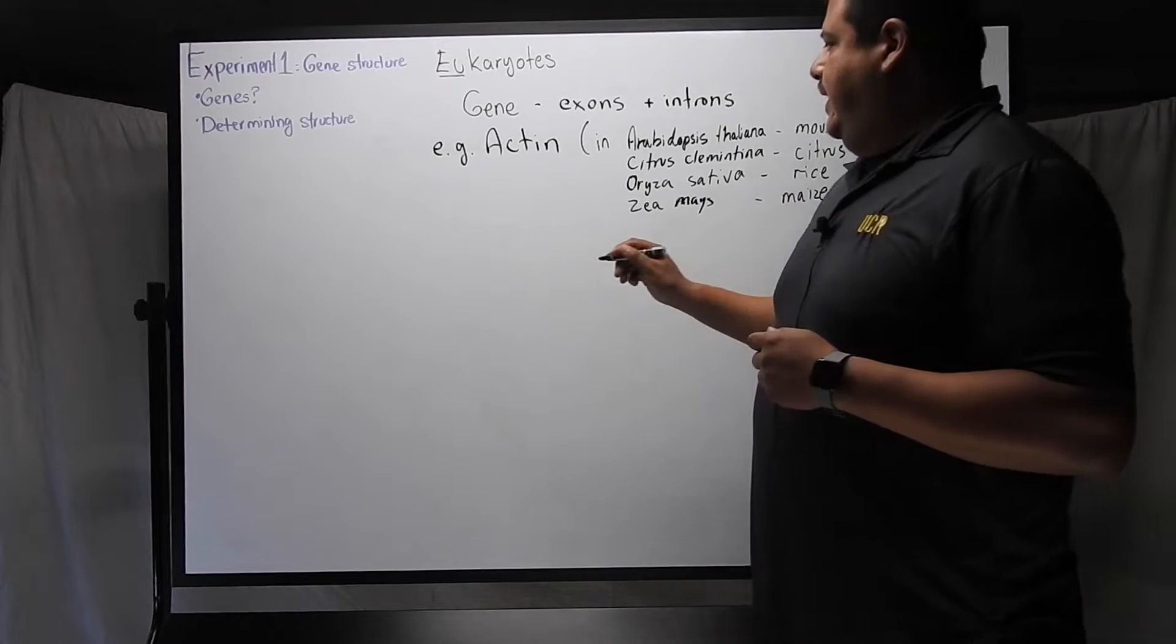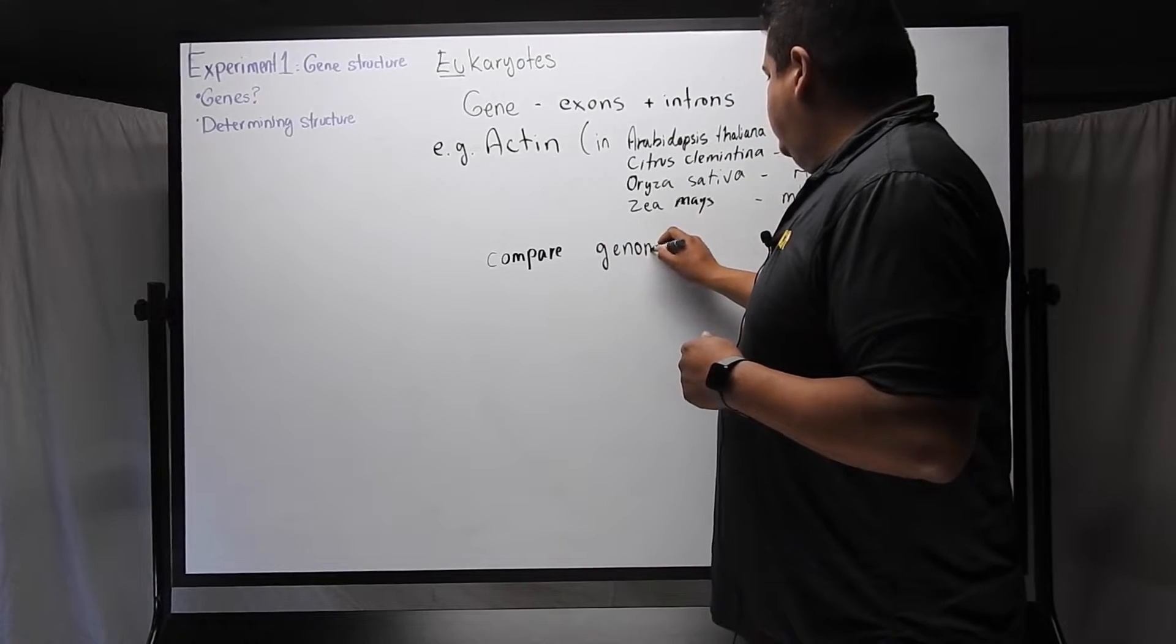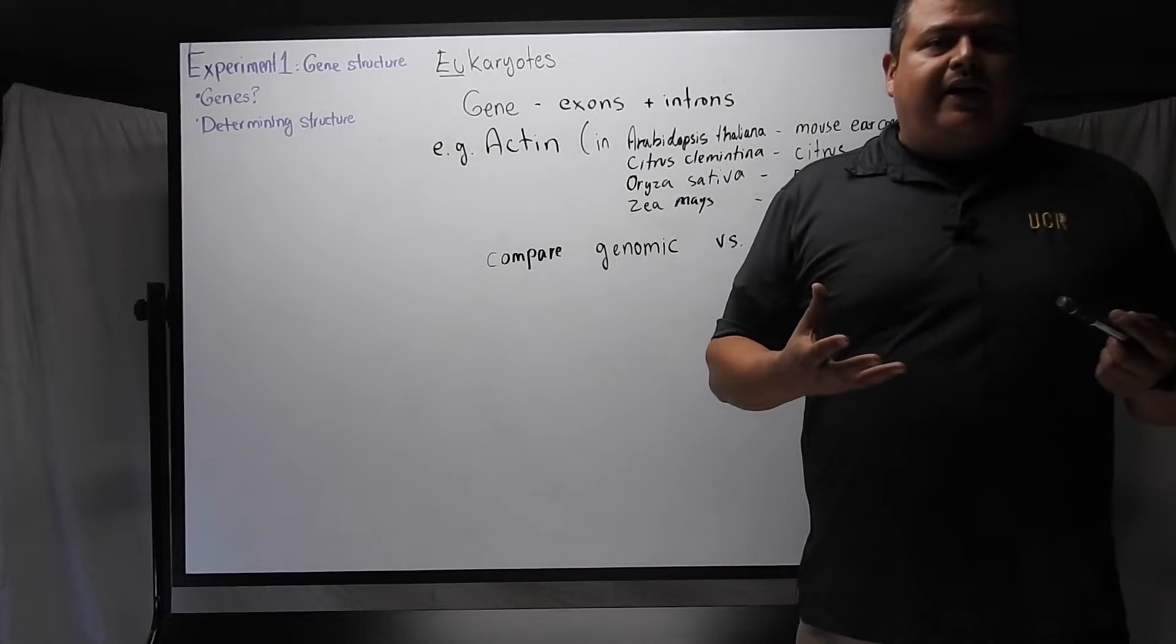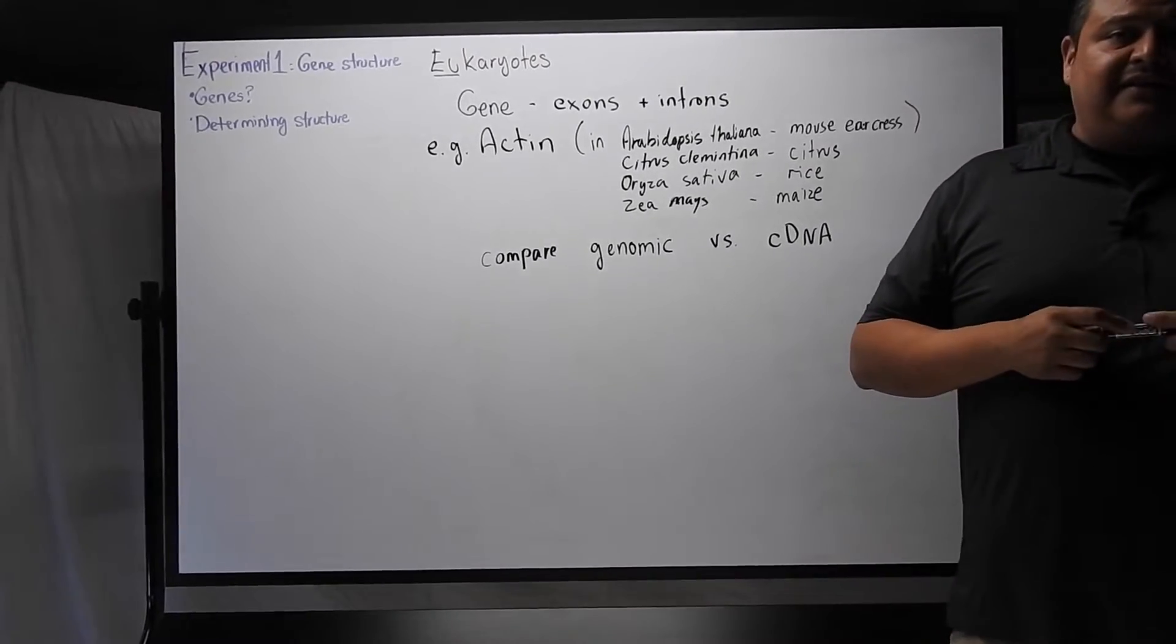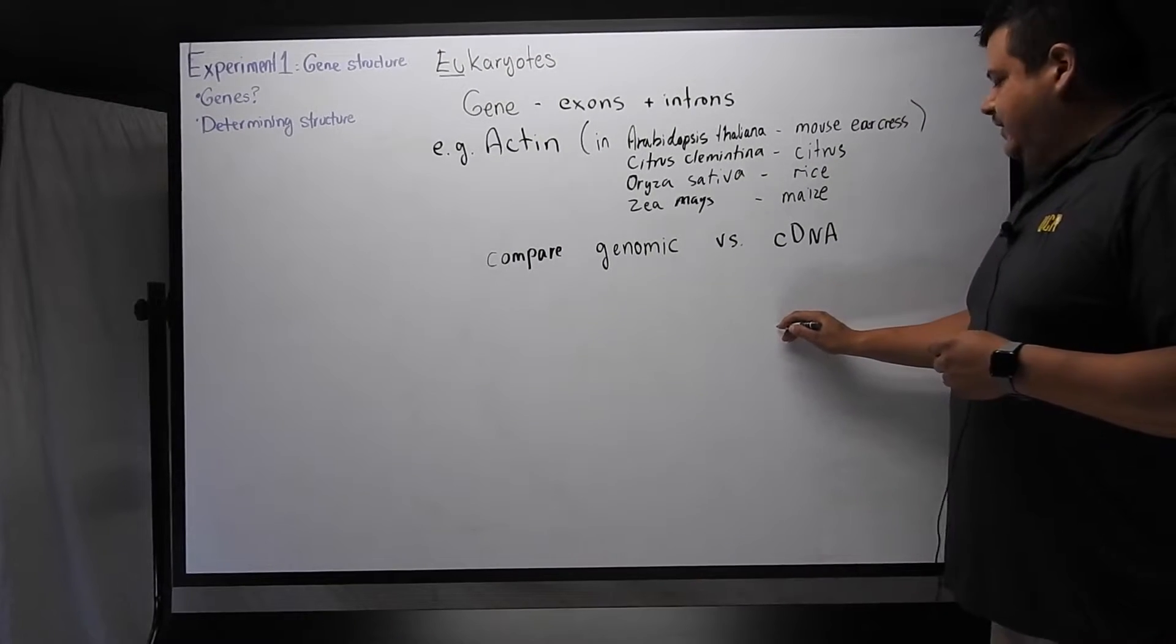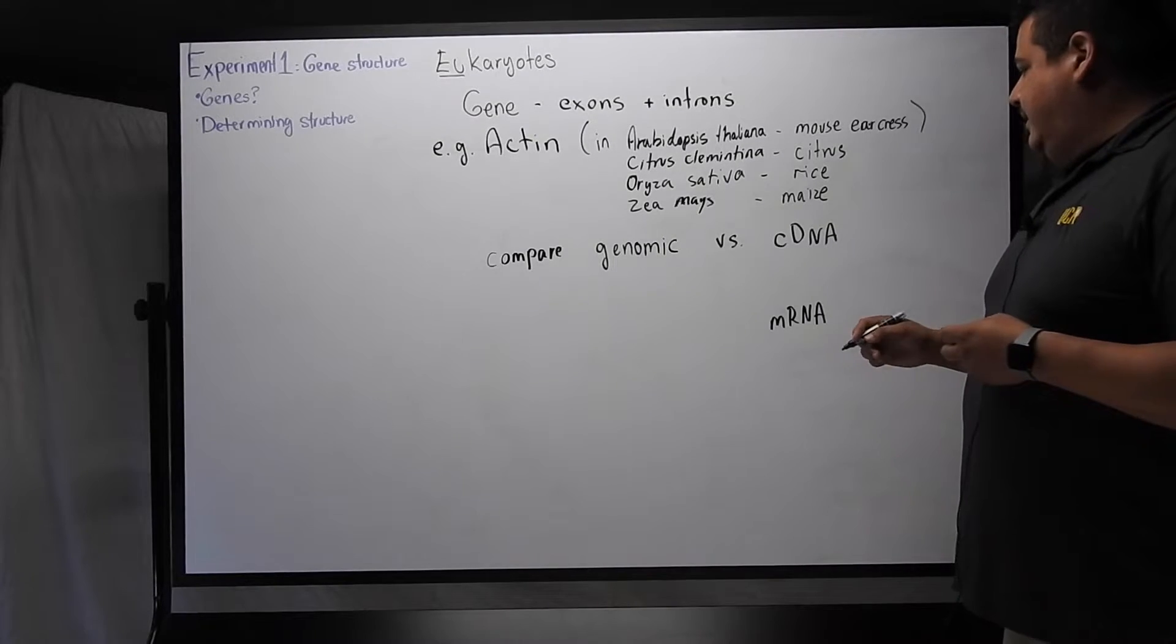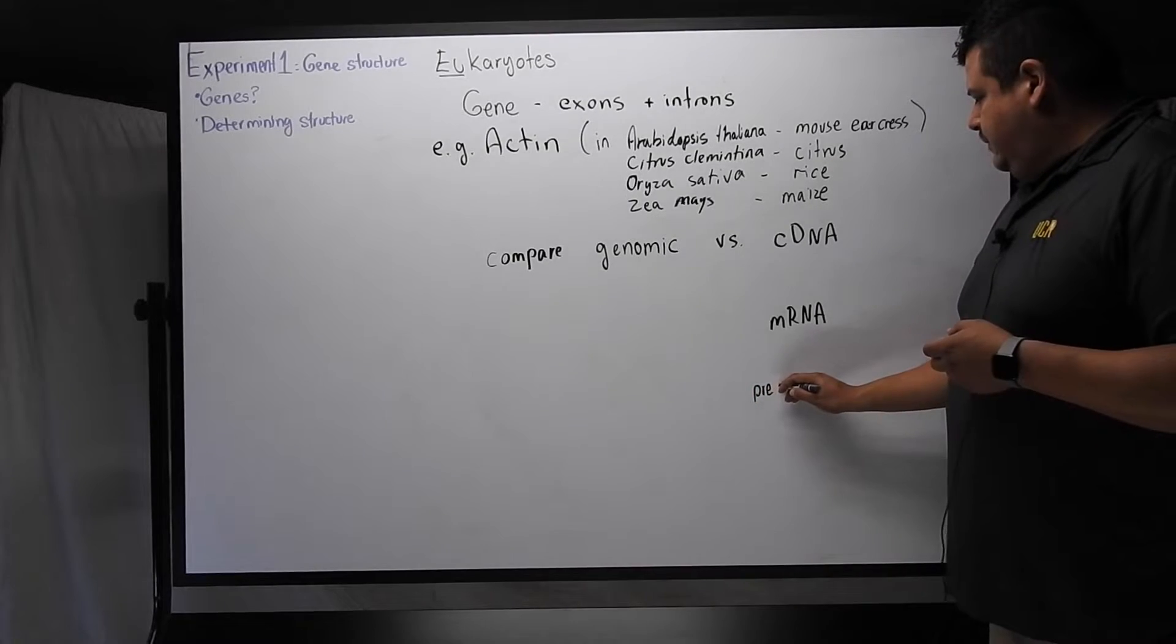So how are we going to determine how it's organized in each one of these plants? Well, we're going to compare genomic DNA to cDNA. Genomic DNA is the DNA that you'll find in the nucleus of these eukaryotes in these plants. The cDNA is not naturally occurring. This is something that we have to synthesize in the laboratory because it serves as a proxy for mRNA. Or in this case, mRNA means mature messenger RNA.